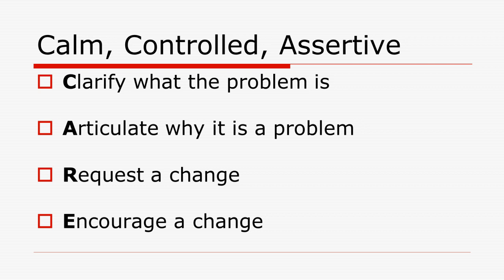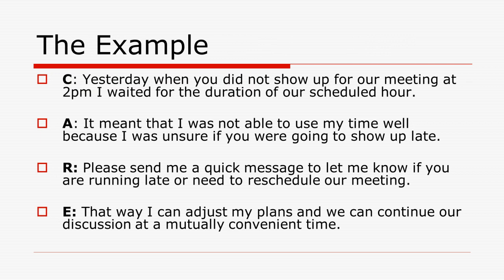Clarify what the problem is. It is important to be specific about the behavior that is of concern. Focus on the behavior to be changed. Articulate why the behavior is a problem — state why the behavior is likely to hinder them, irritate others, or how it makes you feel. Respectfully request a change in behavior. Encourage them to change by offering the positive consequences of changing. Again, it is best to focus on positive consequences here. However, in some cases, you may also need to indicate the negative implications of failing to change.